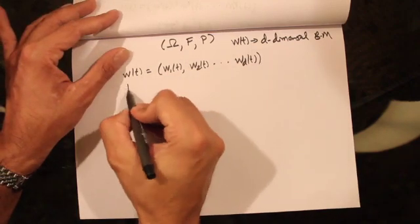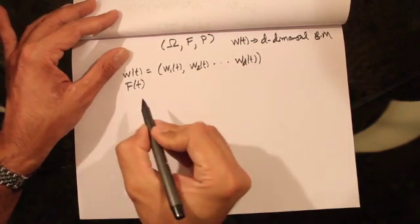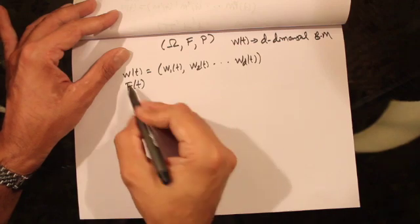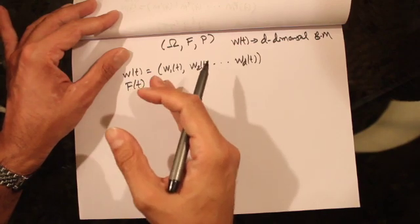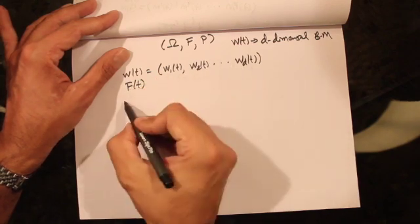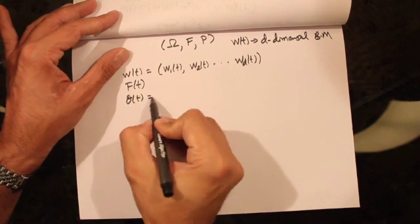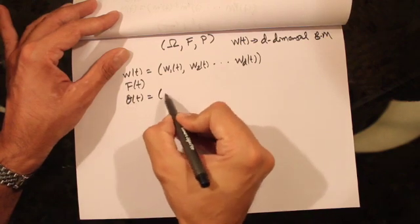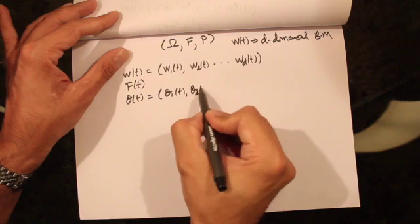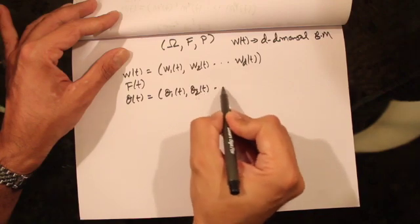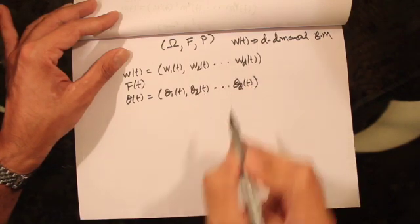Associated with this Brownian motion, we're going to have a filtration F_t. We're also going to have a multidimensional adapted stochastic process given by theta_t, which can be written as a vector: theta_1t, theta_2t, all the way to theta_dt.